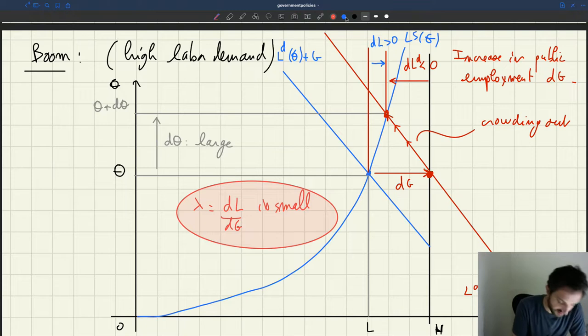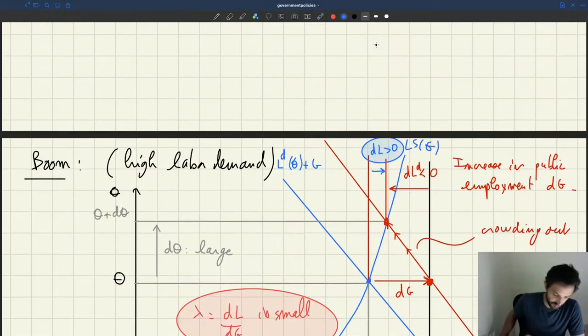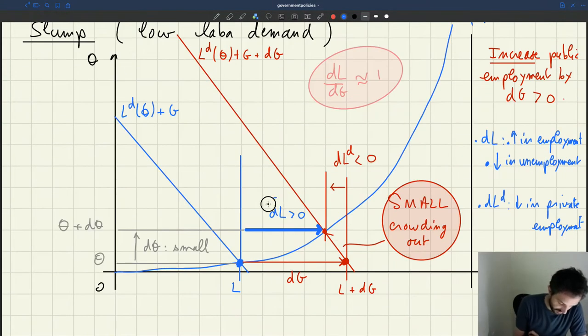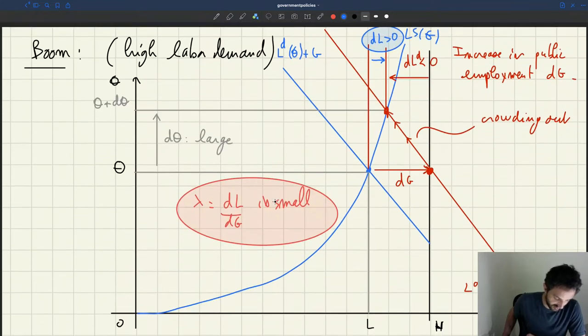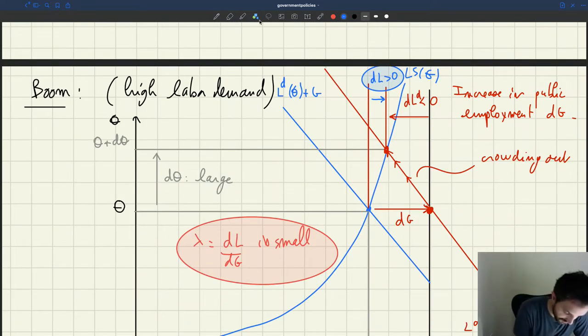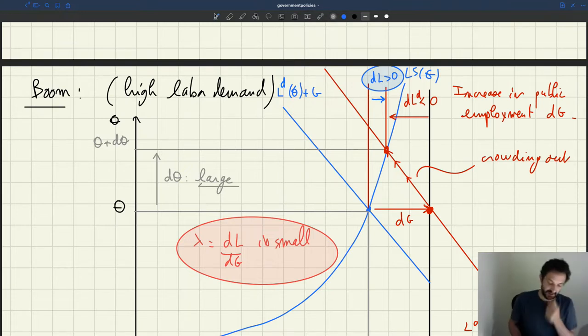Just because the dL that we have here is so small, whereas before, if we go up, dL that we had here was so big, you know, because the increase in tightness was very small, whereas the increase in tightness that we've showed here is quite large. Okay. So that's what happens.